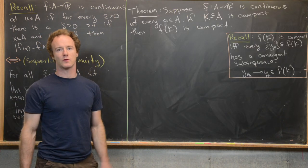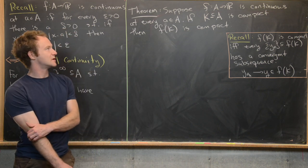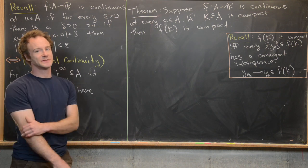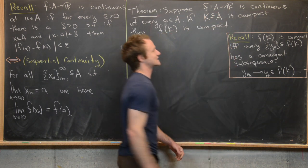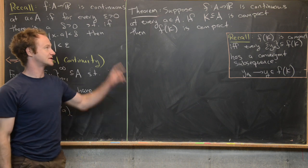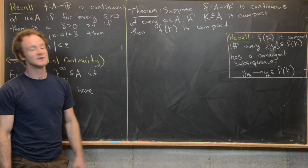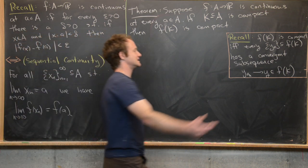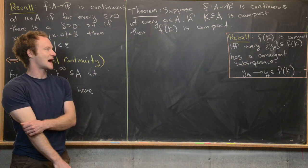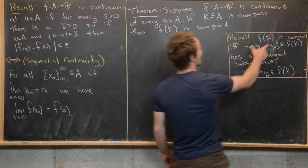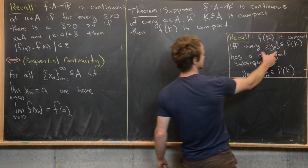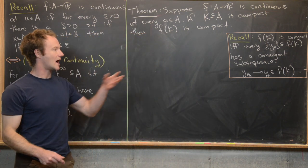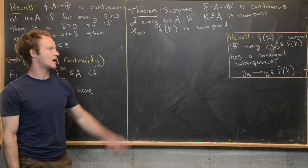We're ready to prove the result we hinted at, stated as the following theorem. Suppose f from A to R is continuous at every point in A, and A is a subset of the real numbers. If K is a compact subset of A, then f(K) is compact. We recall that compactness is equivalent to sequential compactness, so we can show f(K) is compact if and only if every sequence inside f(K) has a convergent subsequence y_{n_k} that converges to some y also in f(K).